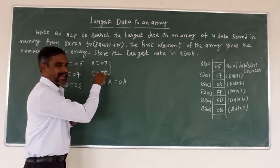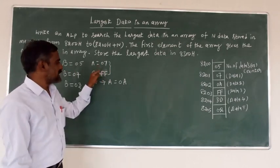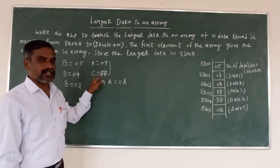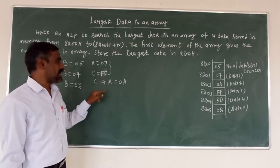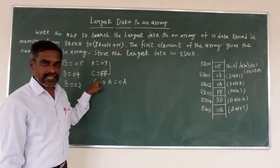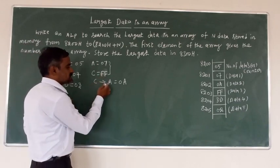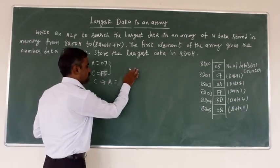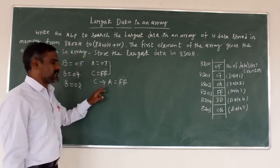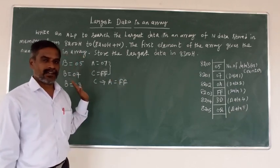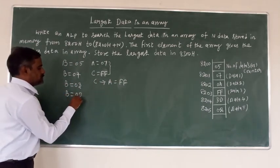Compare the two data. The carry flag will be set again because the C register data 0Fh is largest. So we move C register data to accumulator - now accumulator equals 0Fh. The largest data at present is in accumulator 0Fh. Again increment B counter: B equals 02.